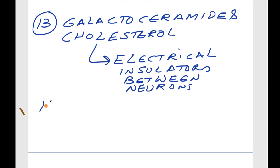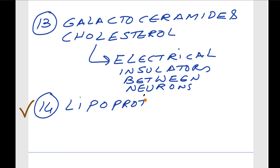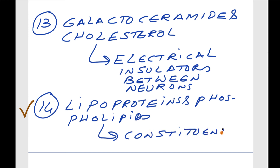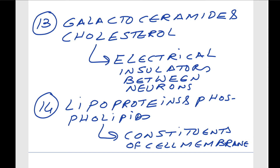Finally, lipoproteins and phospholipids play an important role in the maintenance of cell membrane structure — they are major constituents of the cell membrane. Without phospholipids, we cannot imagine the cell membrane structure. These are the various functions of lipids.